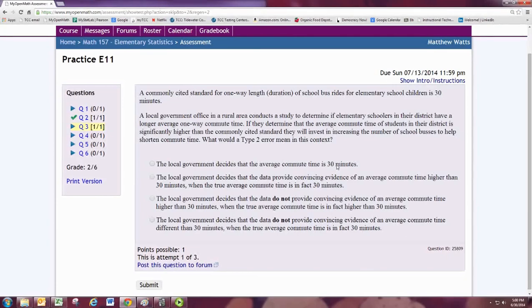In the second choice, the local government decides the data provides convincing evidence that the average commute time is higher than 30 minutes, when the true average time is, in fact, 30 minutes. This is incorrect, as the decision is one of rejecting the null, which doesn't happen with the type 2 error. And the truth is that the null hypothesis is true, which also doesn't happen with the type 2 error.